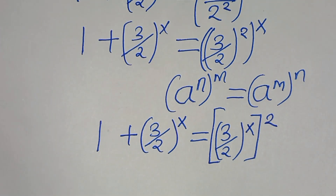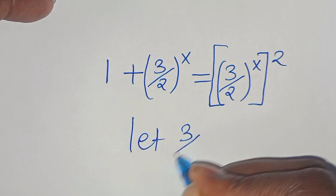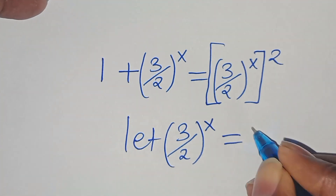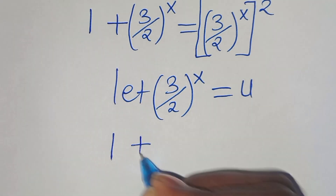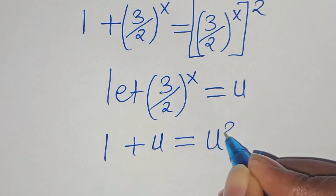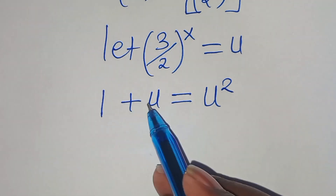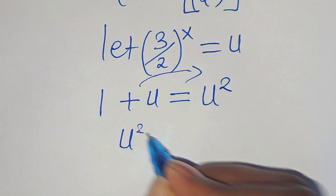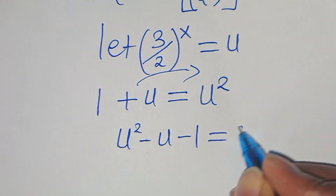The next step: we let (3 over 2) raised to the power of x equal u. Substituting u, we have 1 plus u equals u squared. Rearranging, we get u squared minus u minus 1 equals 0.